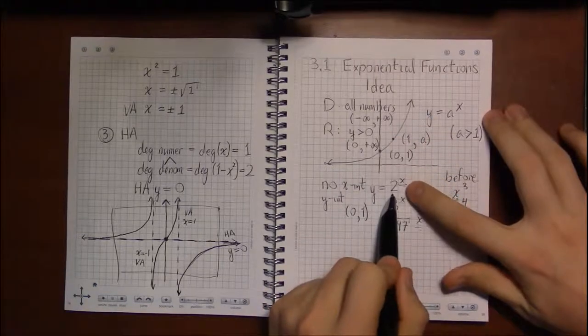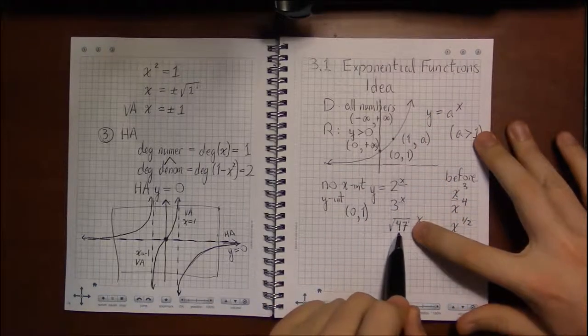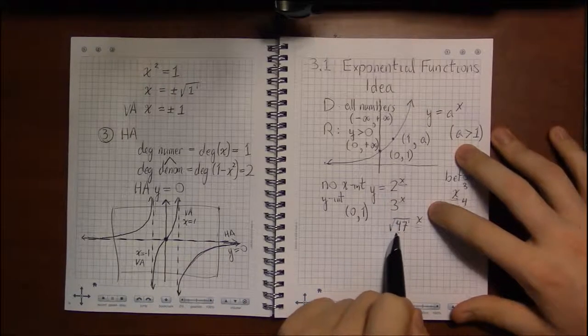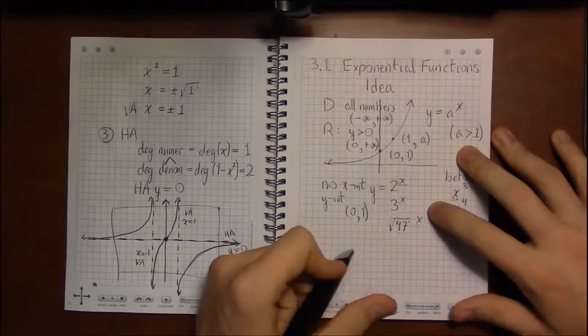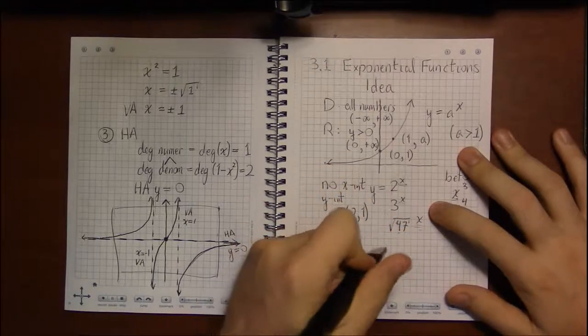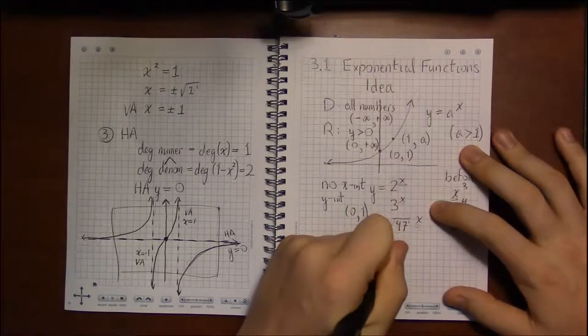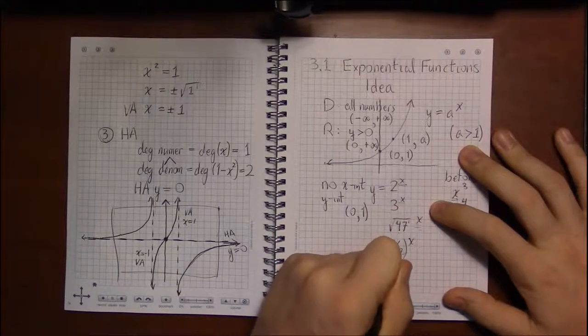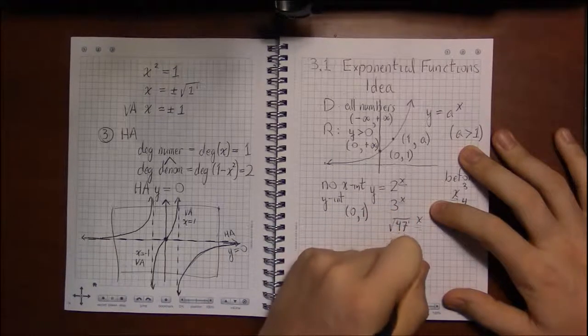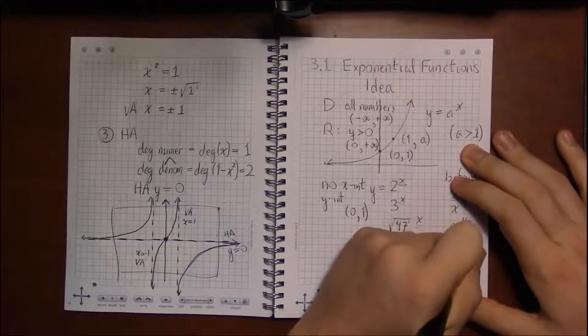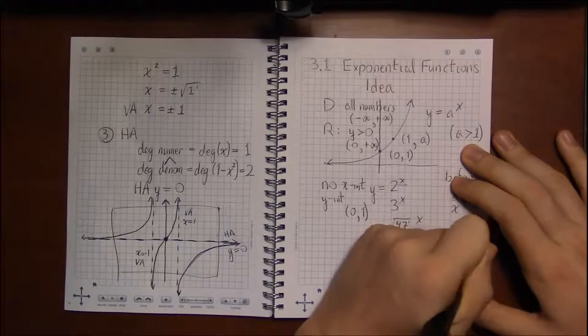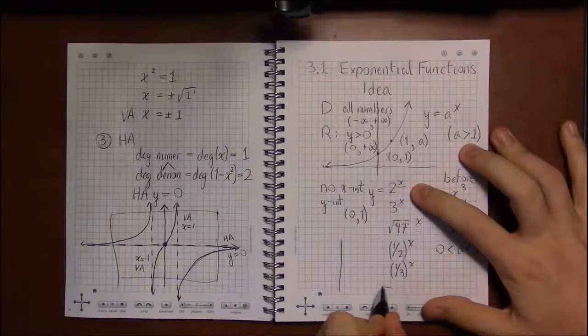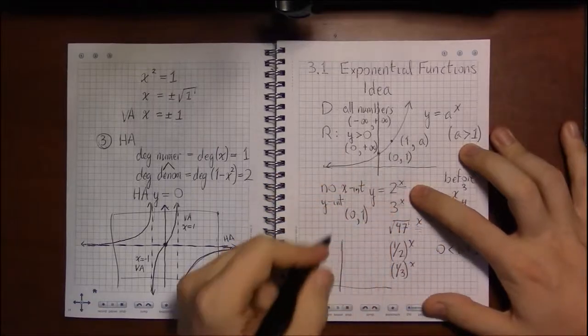Now, this is how graphs like 2 to the x, 3 to the x, square root of 47 to the x look, because all these numbers 2, 3, square root of 47 are greater than 1. But if you have a fraction, like say 1 half to the x, or 1 third to the x, if a is between 0 and 1, then the graph just flips across the y-axis.